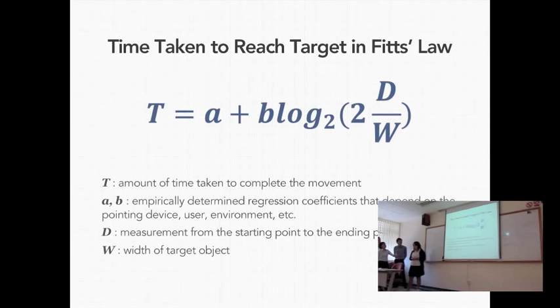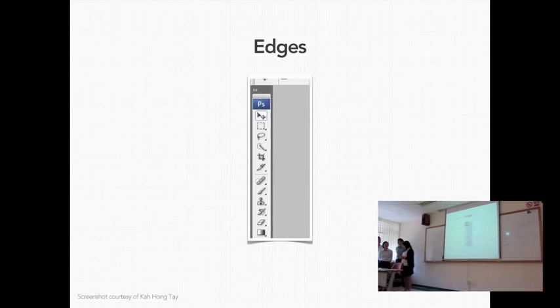All right, so before that, the formula. Okay, this looks a bit less intimidating than, you know, Hick's law. So I'm gonna simply explain to you. T is, of course, the time taken. A and B are the variables that is dependent on the users, the environment, even the pointing device. And then D over W will be the distance over the width of the target object.